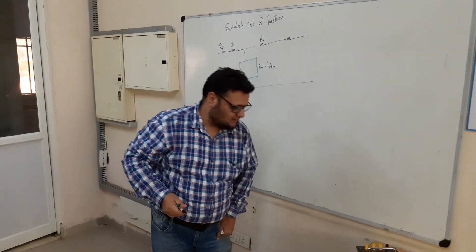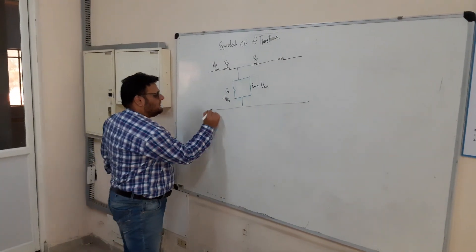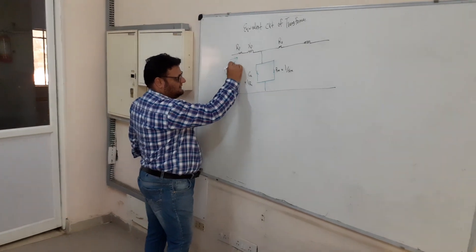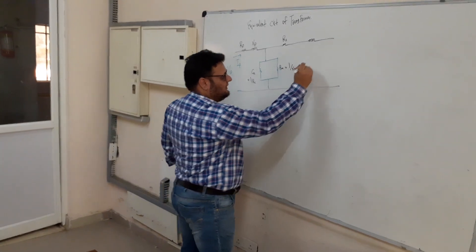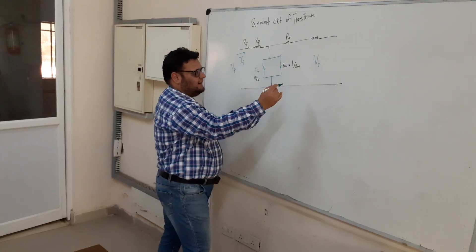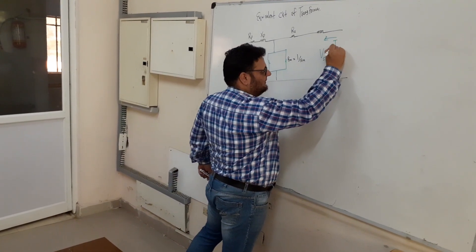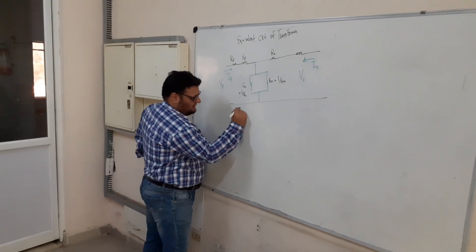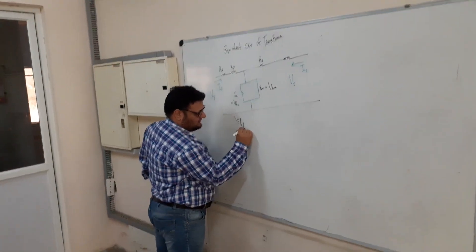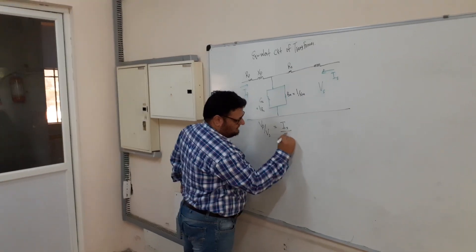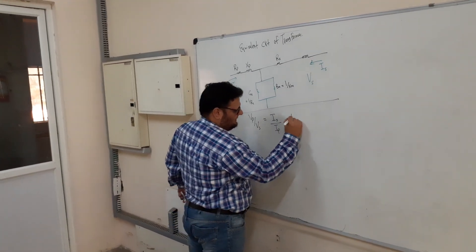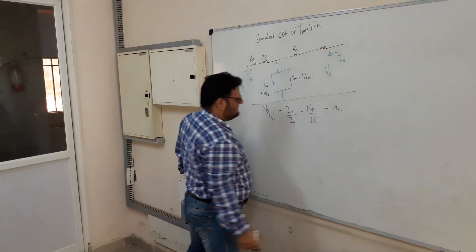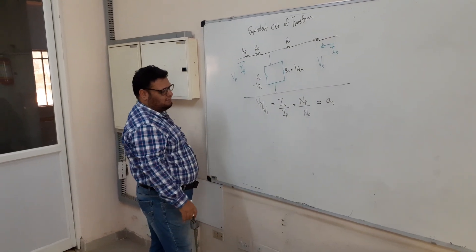In this equivalent circuit diagram, VP represents the primary voltage, IP is the current in the primary side, VS is the voltage in the secondary side, and IS is the current in the secondary side. One important ratio is the turns ratio, governed by VP/VS = IS/IP = NP/NS, and this turns ratio we can write as A. Now, how do we reflect this turns ratio?